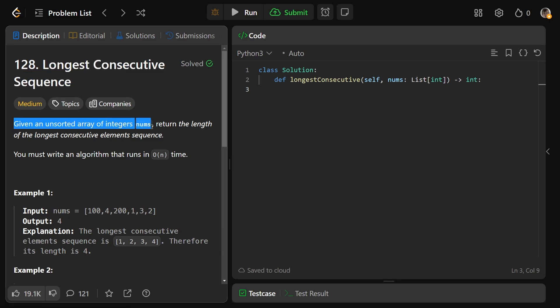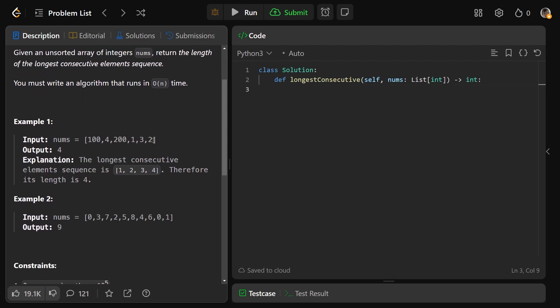We're given an unsorted array of integers nums, and we need to return the length of the longest consecutive elements sequence. This is such a confusingly written problem, and it's much better with the example. So if you look right here, we have 100, 4, 200, 1, 3, and 2.